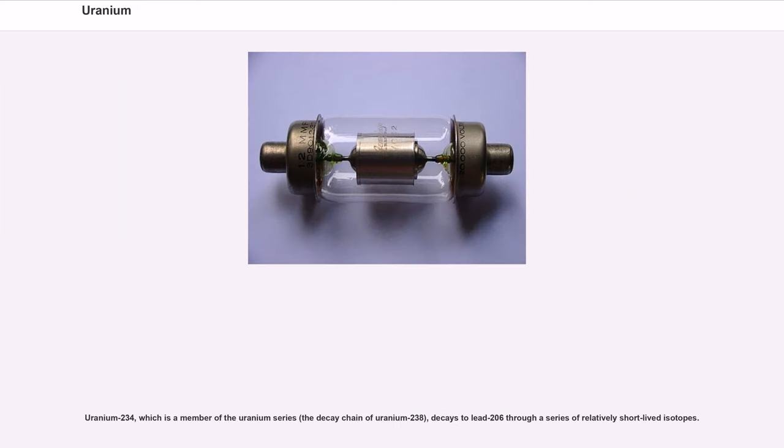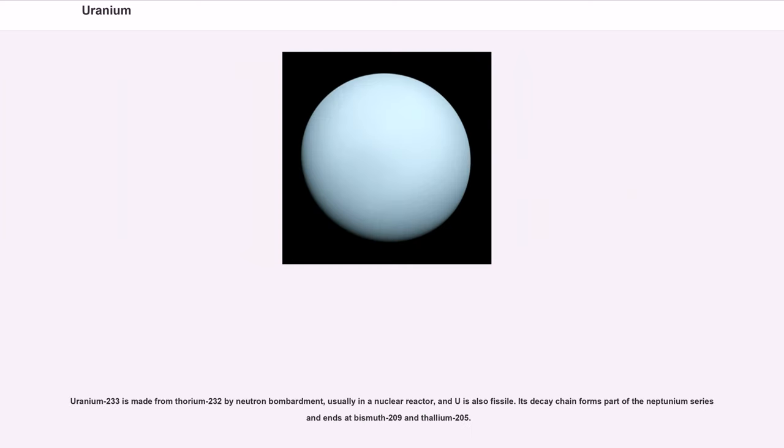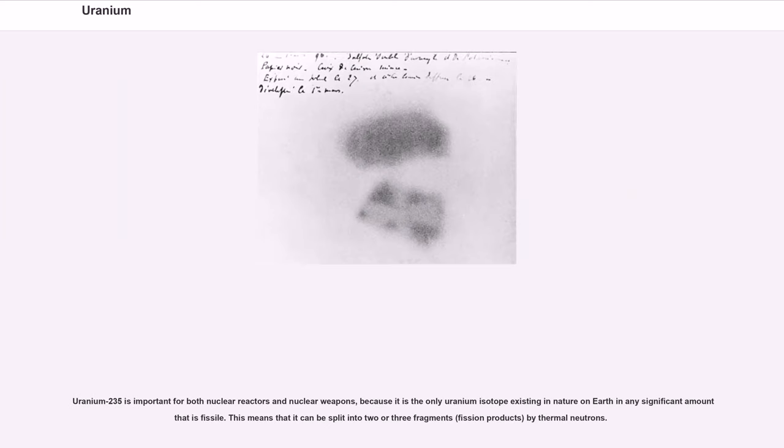Uranium-234, which is a member of the uranium series (the decay chain of uranium-238), decays to lead-206 through a series of relatively short-lived isotopes. Uranium-233 is made from thorium-232 by neutron bombardment, usually in a nuclear reactor, and U-233 is also fissile. Its decay chain forms part of the neptunium series and ends at bismuth-209 and thallium-205. Uranium-235 is important for both nuclear reactors and nuclear weapons because it is the only uranium isotope existing in nature on Earth in any significant amount that is fissile. This means that it can be split into two or three fragments (fission products) by thermal neutrons.